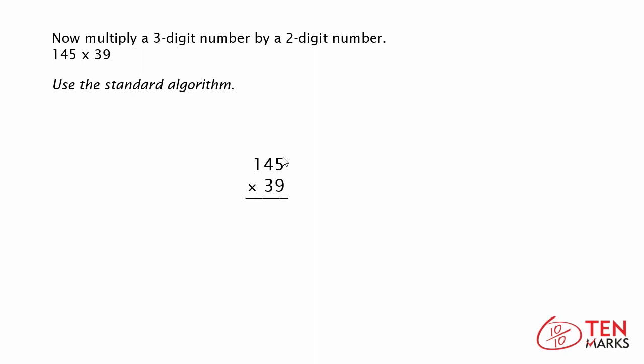When you use the standard algorithm, you want to line up the numbers in columns: ones column, tens column, and hundreds column. You're going to first multiply 145 by 9.